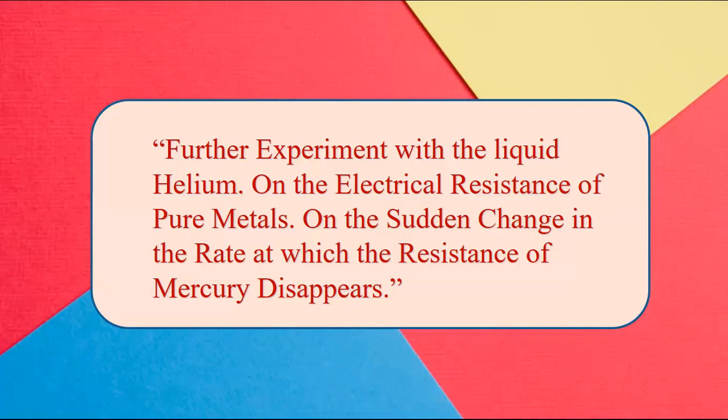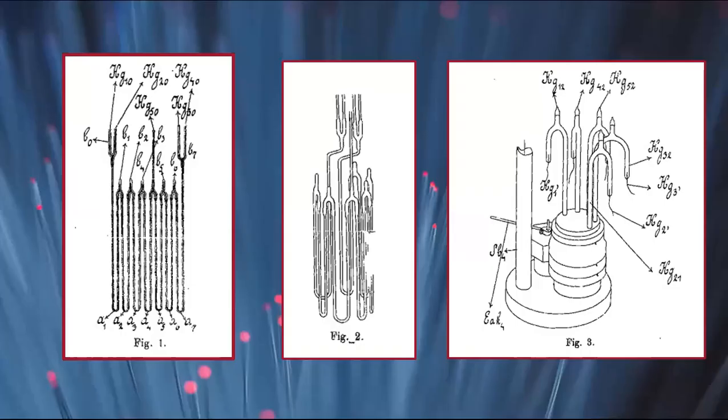Moving on to the last part of the paper, it closely investigates the phenomenon of sudden change in rate at which resistance of mercury decreases. This is the image of the apparatus which was used. It consists of seven U-tubes of about 0.005 square millimeter cross section joined together with the upside Y-piece.